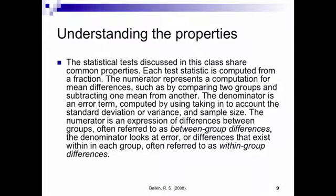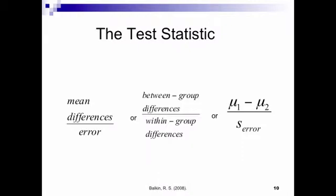So all the tests that we do in this class share some common properties. One interesting thing is that each test statistic can be computed from a fraction. The numerator, the top part of the fraction, always represents a computation related to mean differences. Like when you're comparing two groups. Remember in the t-test, you just subtracted one mean from another mean. The denominator is always an error term. It's computed by looking at within group differences. Remember that when you have a mean, not everybody scores the mean in a group. A group can vary. And so we need to account for that variance. And so that's error. So we can always illustrate these tests by looking at mean differences divided by error. Or between group differences divided by within group differences.